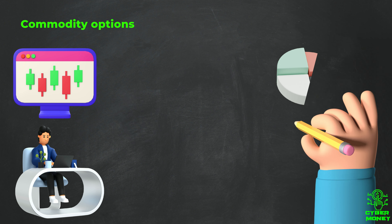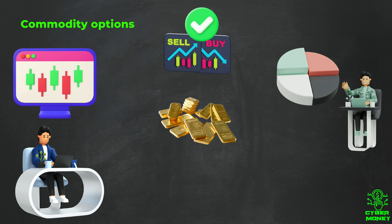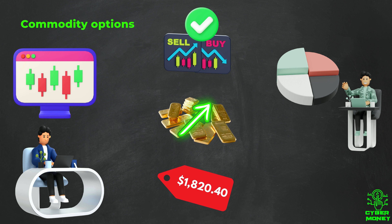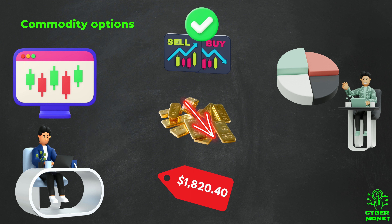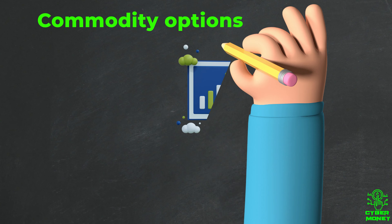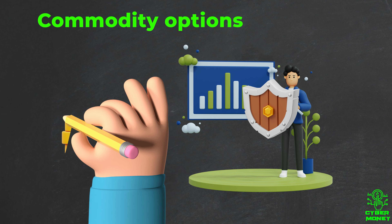Commodity options trading is a form of derivatives trading where an investor buys or sells the right, but not the obligation, to buy or sell a commodity at a predetermined price — known as the strike price — within a specified time frame called the expiration date. The buyer of a commodity option pays a premium to the option seller for the right to buy or sell the commodity at the strike price. If the buyer chooses to exercise their option, they will buy or sell the underlying commodity at the strike price. If the price moves in favor of the option buyer, they can realize a profit by selling at a higher price than the strike price. If not, they can let the option expire worthless and only lose the premium paid.